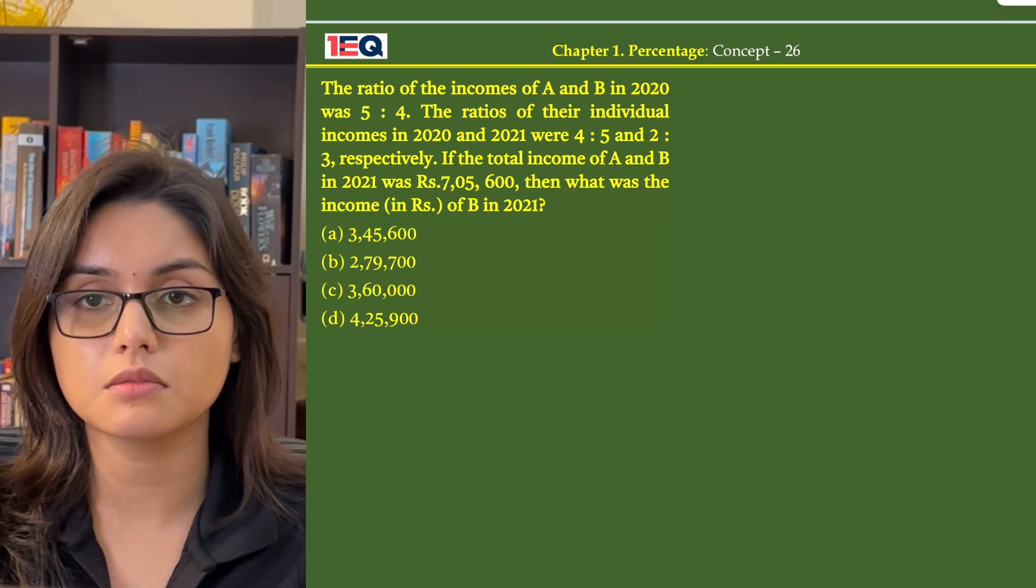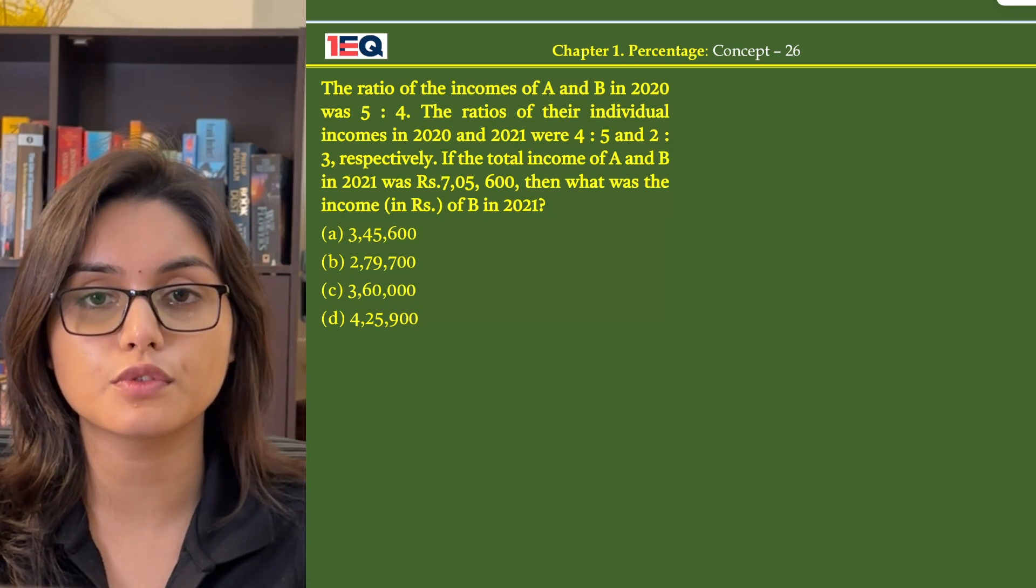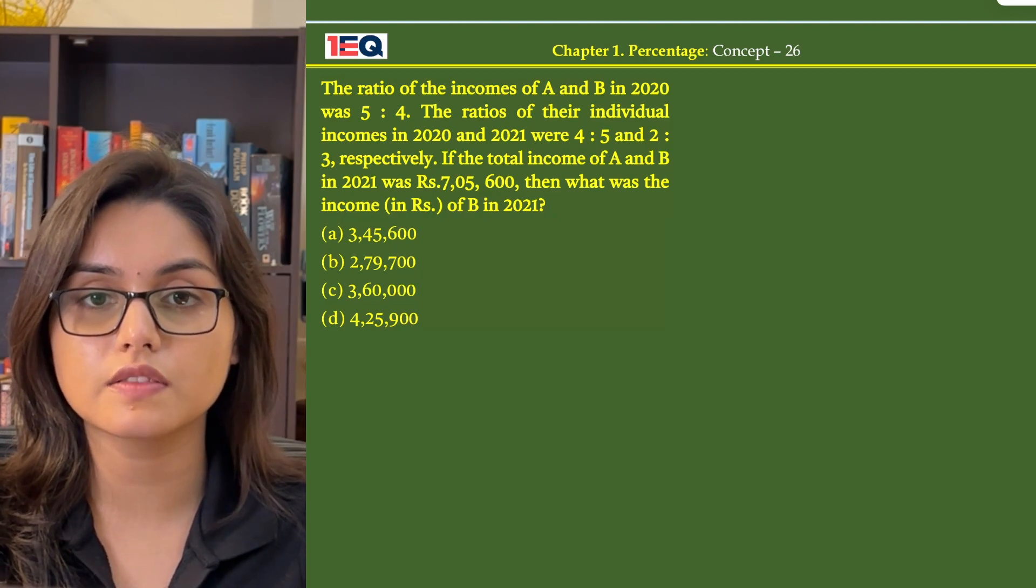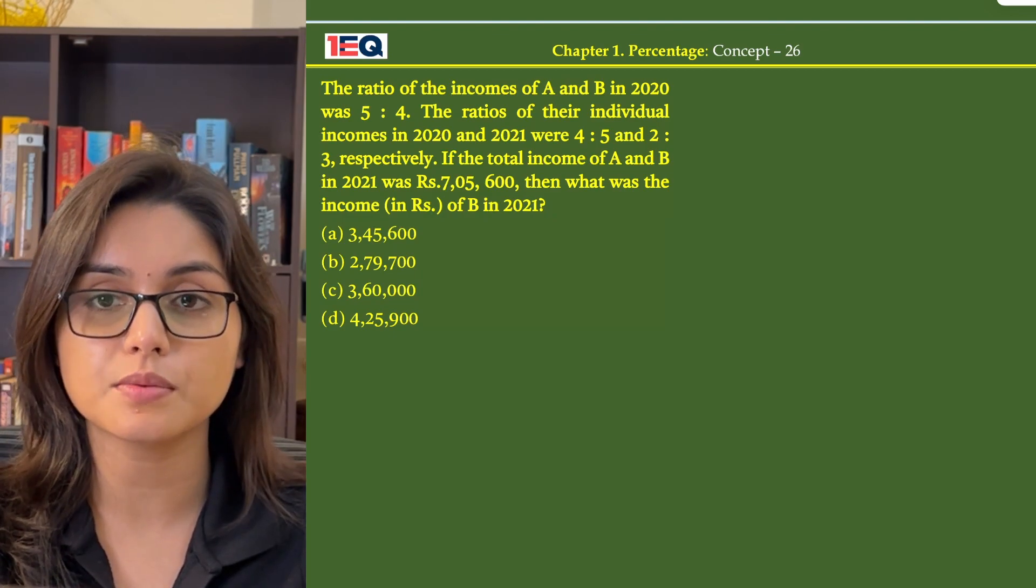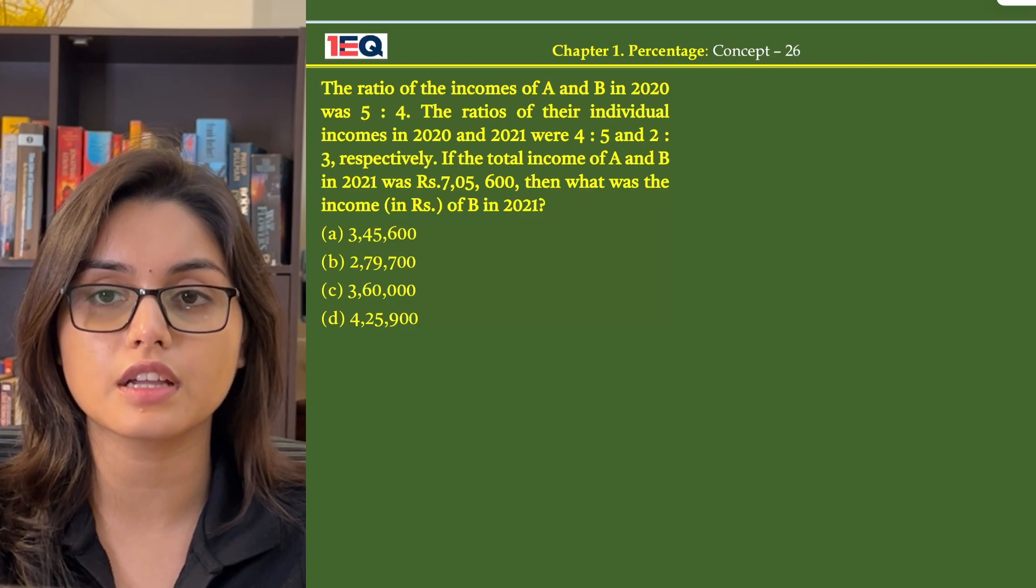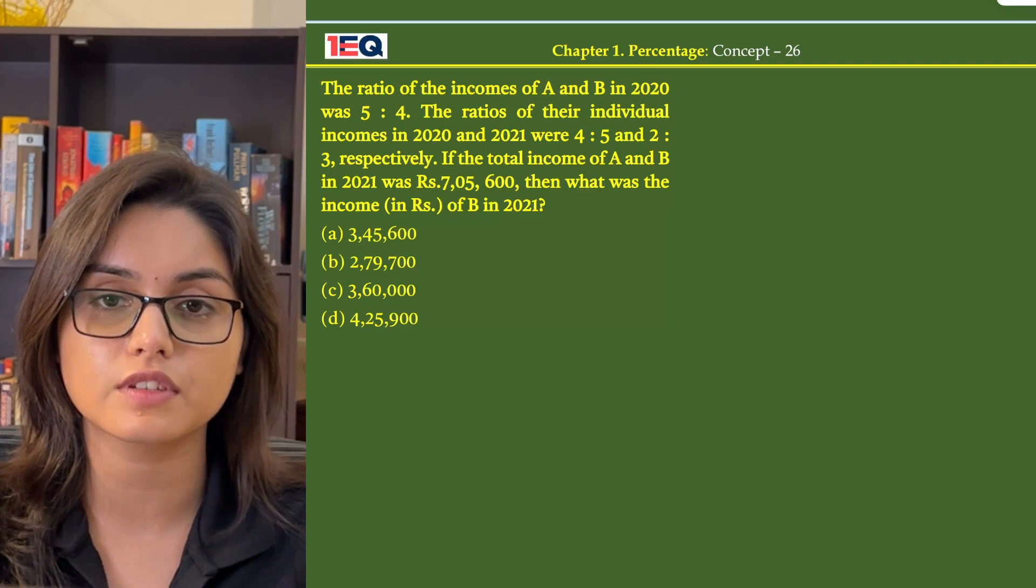The ratio of the incomes of A and B in 2020 was 5 to 4. The ratios of their individual incomes in 2020 and 2021 were 4 to 5 and 2 to 3 respectively.